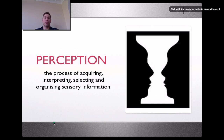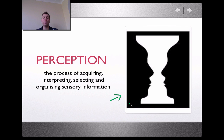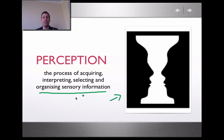Perception is often misconstrued. Here we have a diagram where there are perhaps two ways to perceive what's going on — some might see a vase indicated in the white, and some might see two faces. This definition must be imprinted in our minds: perception is the process of acquiring, interpreting, selecting, and organising sensory information. Everything you get from that display — perception is what we do with that in order to then be able to act in a sporting sense, choosing the appropriate action to optimise performance. Very important key term.